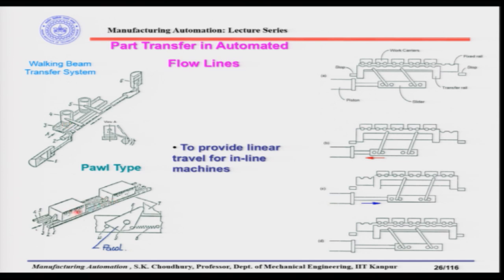The next type is the pole type. In this pole type, these are the parts which are to be transmitted from one place to another. Here is a rod with spring-loaded poles. If you press a pole, it dips inside. When the rod is pushed towards one side, the parts go from one position to the next. When you pull the rod back, the pole goes under the part, dips, goes back to the initial position, and lifts back ready for the next parts to be transmitted.